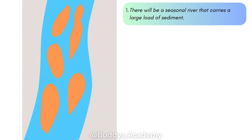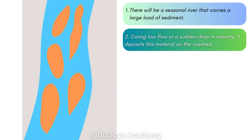So how does a braided stream actually form? Firstly, you have a seasonal river that carries a large load of sediment — meaning it carries a lot of sand, a lot of gravel, and a lot of silt. Then during any low flow or a sudden drop in velocity — because this river occurs in the lower course, which has a very gentle gradient — the river flow decreases. Once there's a sudden drop in velocity, the river slows down and deposits all of the material on the riverbed.